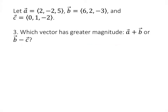Finally, we're asked to find which vector has greater magnitude: a + b or b - c. We first figure out what those two vectors are, find both magnitudes, and compare. So a + b is (2, -2, 5) + (6, 2, -3), which works out to be (8, 0, 2).